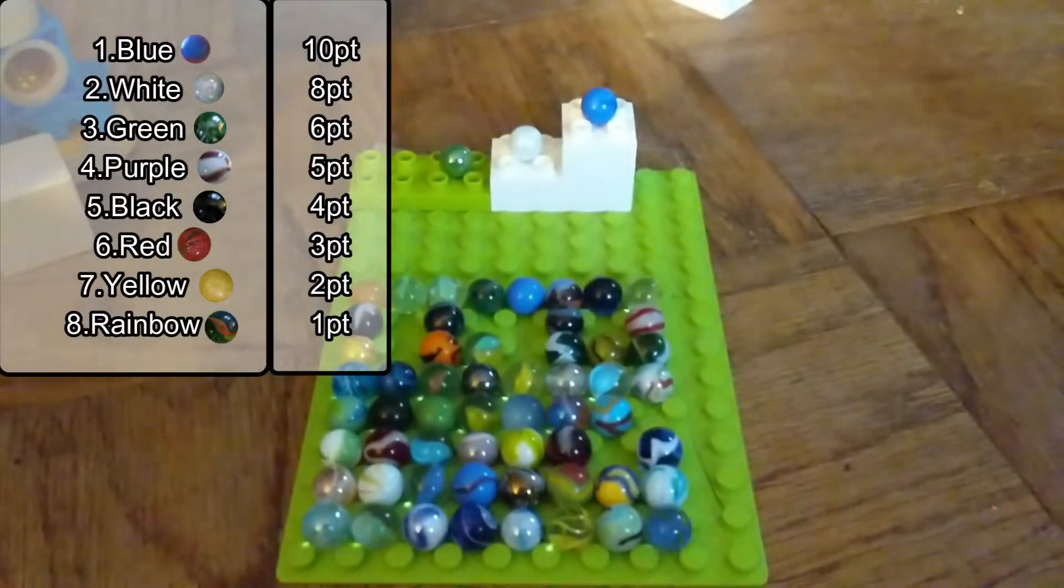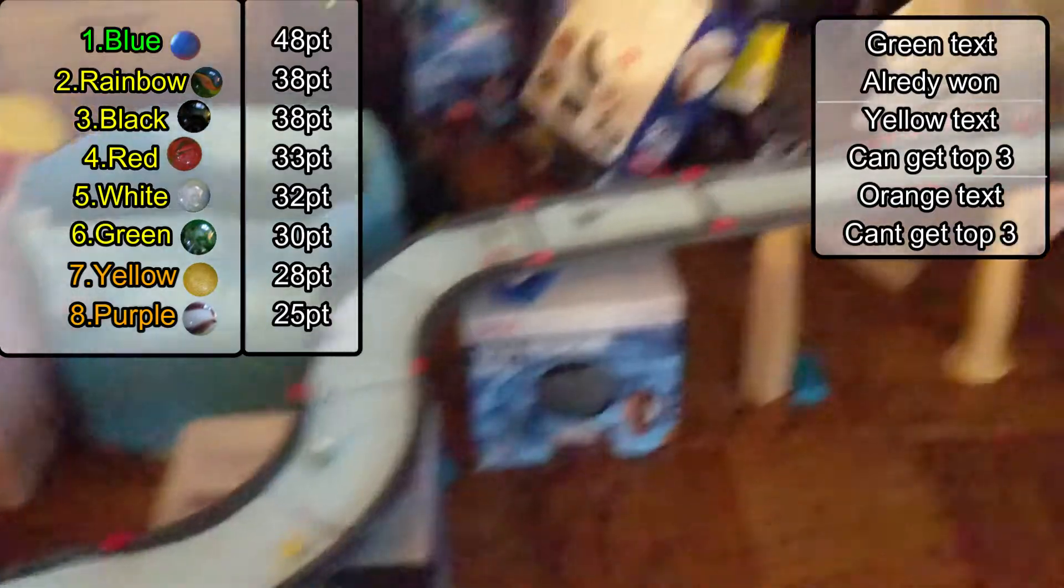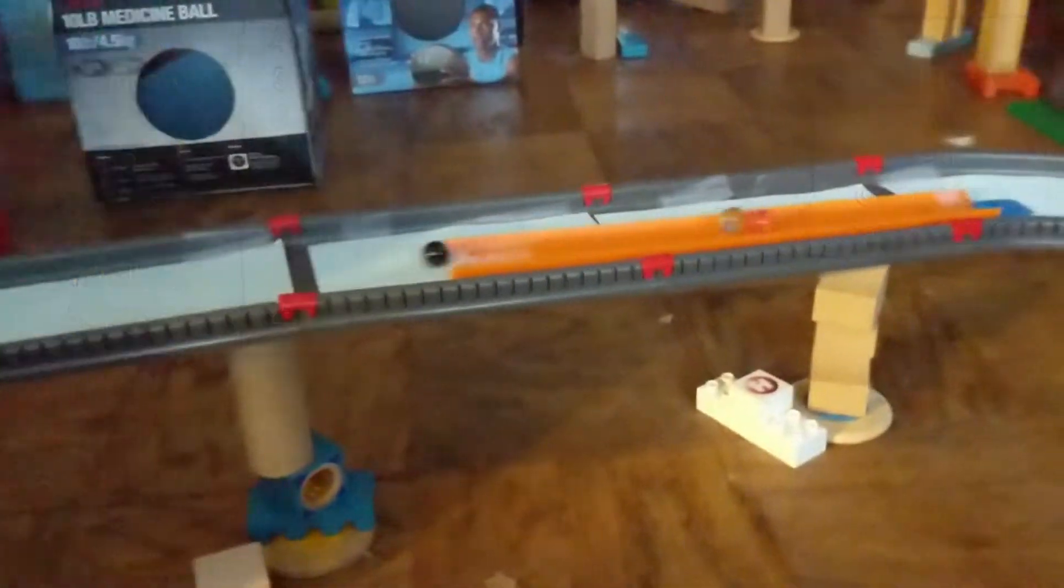No matter what, Black and Rainbow, even though they're going to be tied, they don't have enough points to make up the ground. The other thing, too, is Yellow and Purple can no longer reach the podium, even, with their finishes.